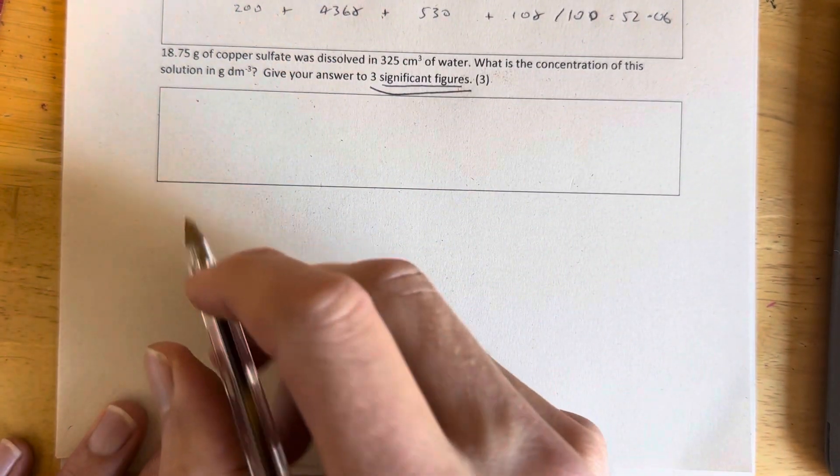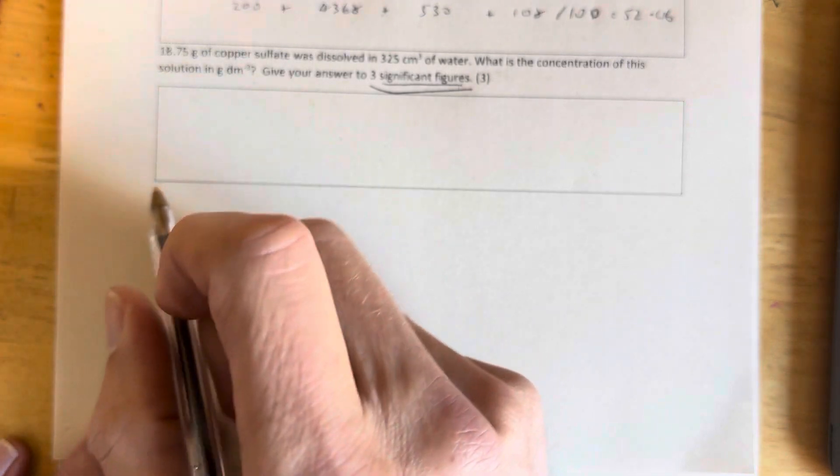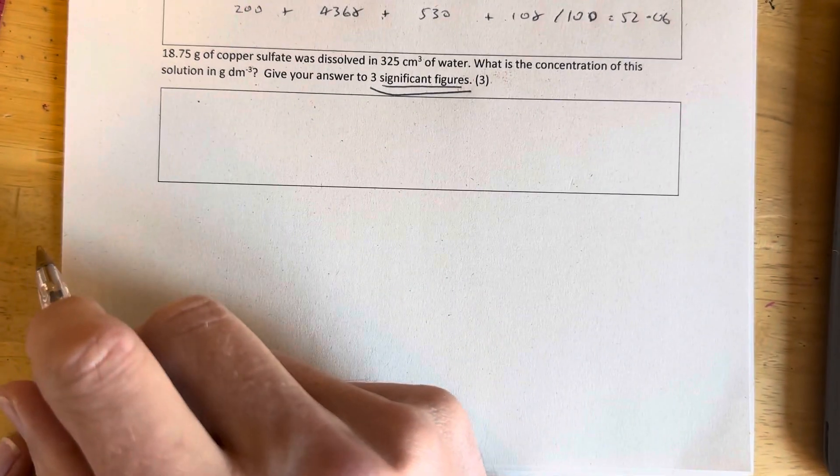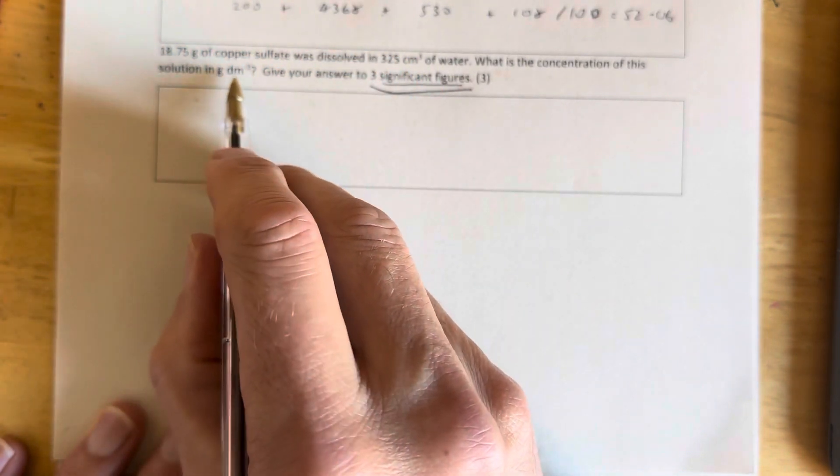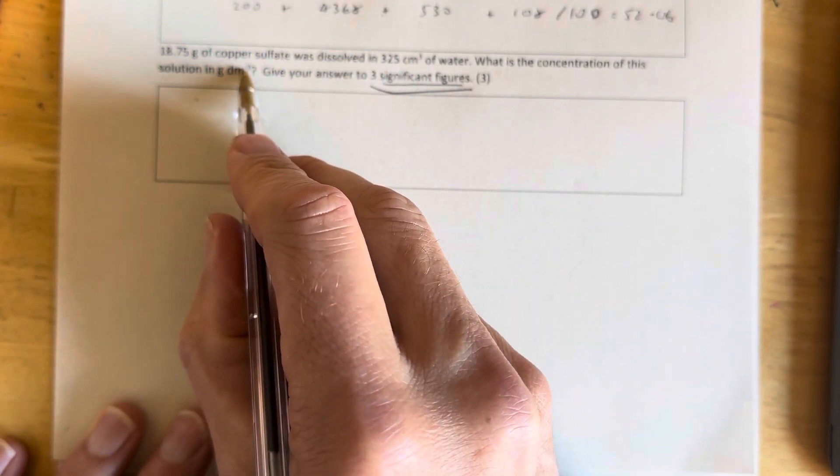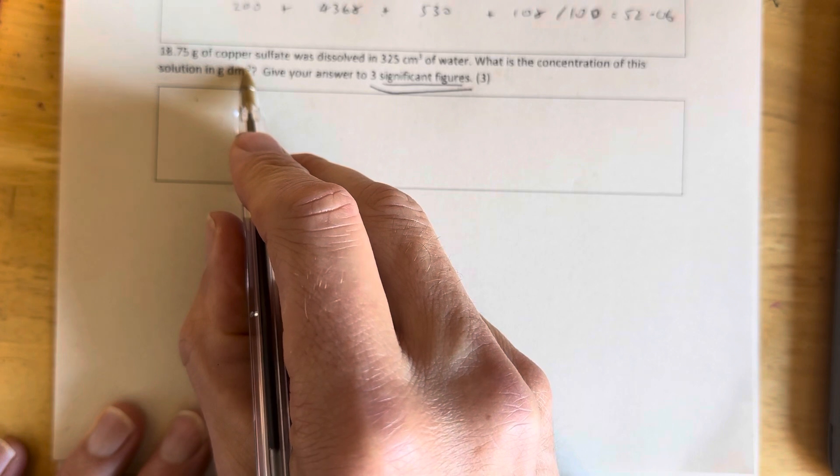So concentration. How are we going to do this? We've got two units of concentration. We regularly use moles per decimetre cubed and grams per decimetre cubed. If you're an Edexcel candidate, grams per decimetre cubed is written like that. And that minus there means per.